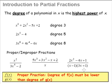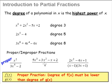Let us take a look at three fractions. For the first fraction, the numerator is of degree 2 and the denominator is degree 4. The top is lower than the bottom, so this is proper. For the second fraction, we have the numerator of degree 3 while the denominator is of degree 1, and therefore this will be improper.